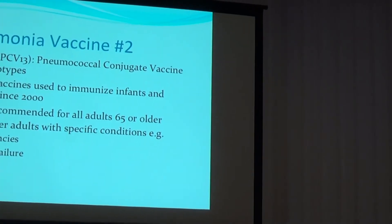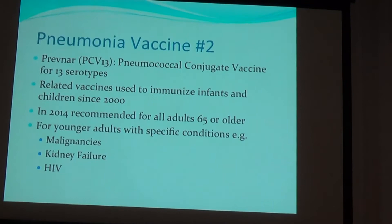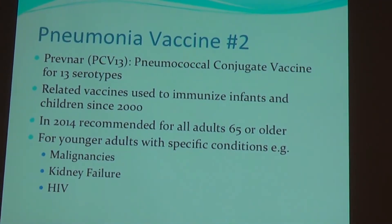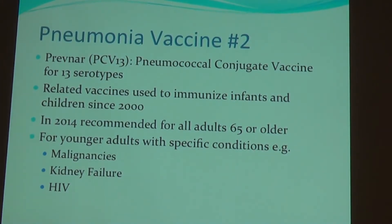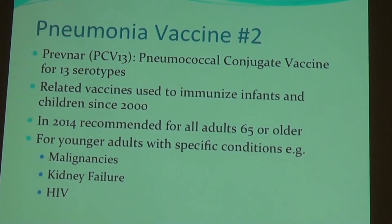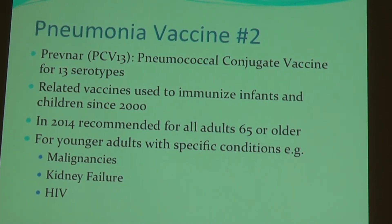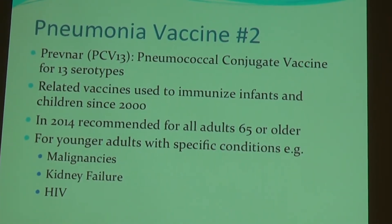Many of you may have already received Pneumovax. However, there's a second pneumococcal vaccine important to know about because of recent recommendations. This is called Prevnar or PCV13 — a pneumococcal conjugate vaccine which protects against 13 serotypes. It's related to vaccines used in infants and children since the year 2000. As of fall 2014, the CDC has recommended that all adults 65 or older receive this second pneumococcal vaccine. We also give Prevnar or PCV13 to adults with serious diseases predisposing them to pneumococcal infections, including malignancies, kidney failure or dialysis patients, or patients with HIV.